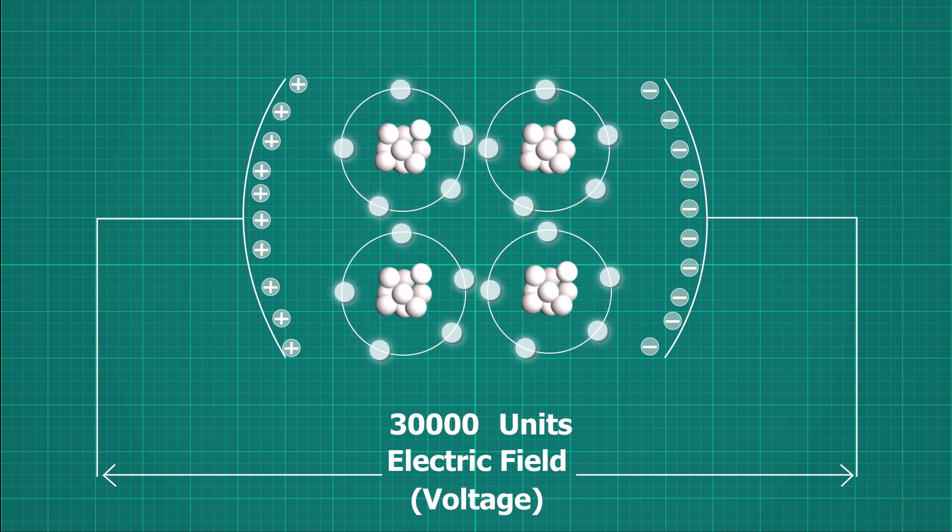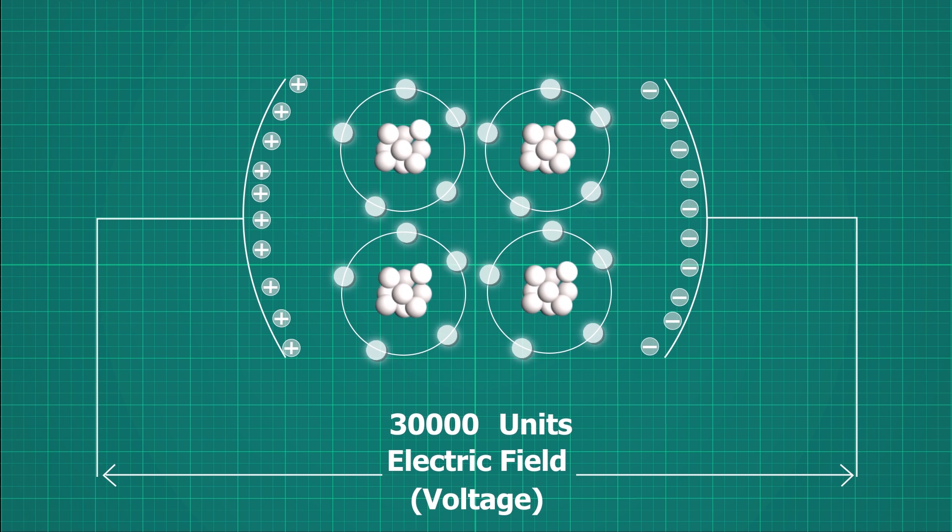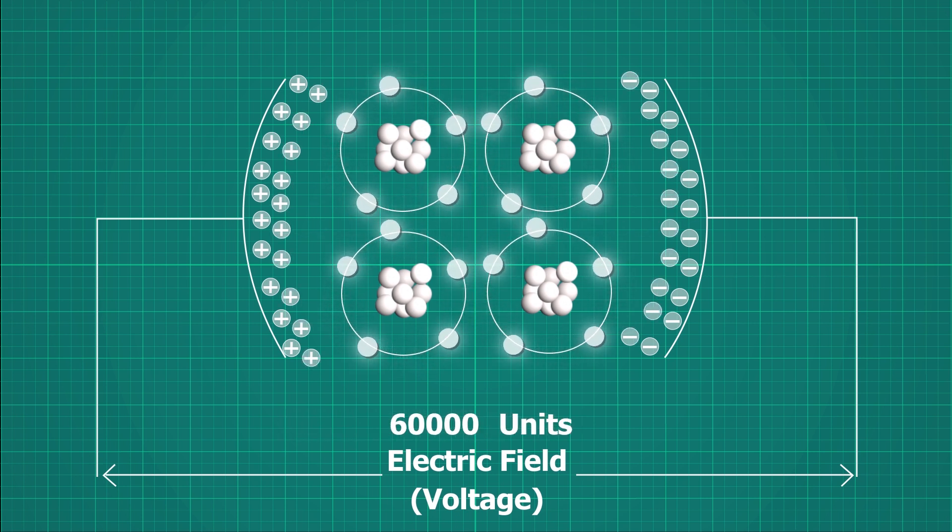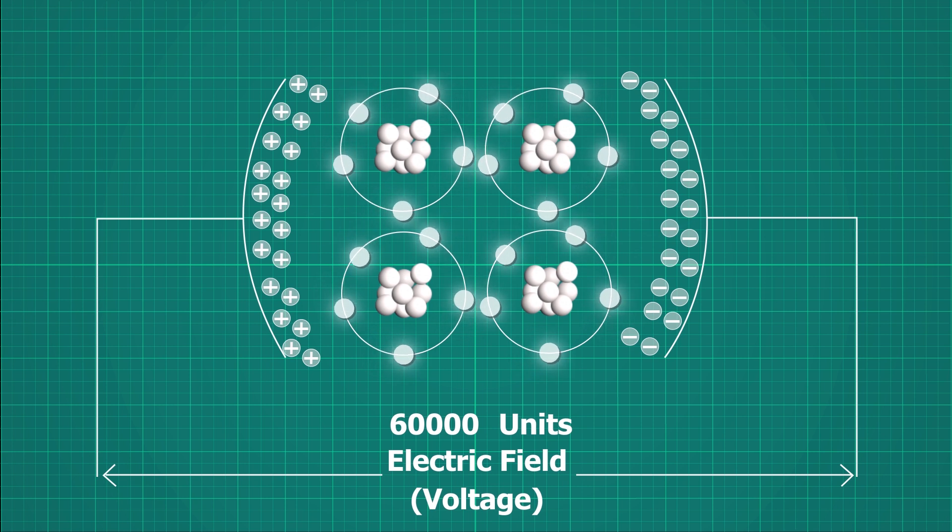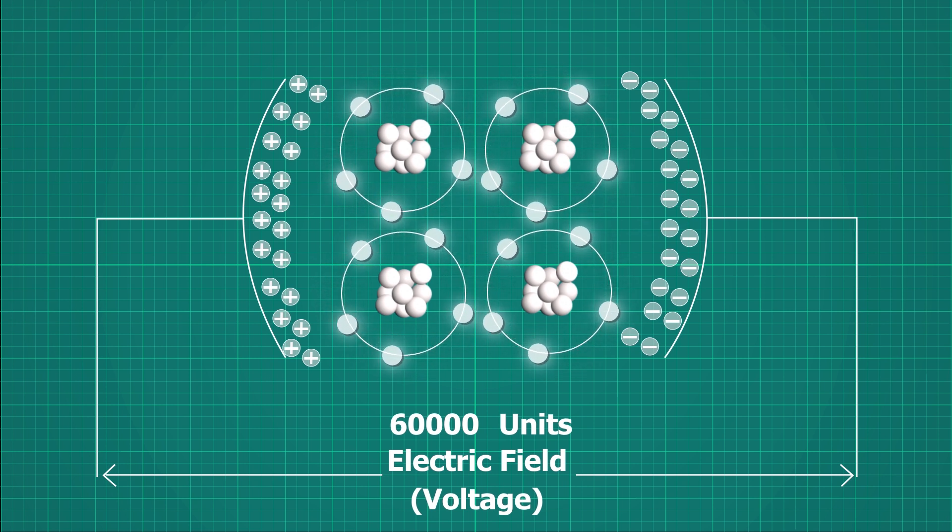If we increase electric field further, kinetic energy increases more. At one point when the internal electrostatic force becomes less than the external electric field, breakdown occurs. Atoms start to lose the electrons and become ions. This process is known as ionization.